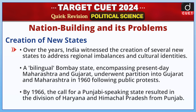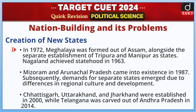Over the years, India witnessed the creation of several new states to address regional imbalances and cultural identities. A bilingual Bombay state comprising present-day Maharashtra and Gujarat underwent partition into Gujarat and Maharashtra in 1960 following public protest. By 1966, the call for a Punjabi-speaking state resulted in the division of Haryana and Himachal Pradesh from Punjab. In 1972, Meghalaya was formed out of Assam, alongside the separate establishment of Tripura and Manipur as states. Nagaland achieved statehood in 1963, and Mizoram and Arunachal Pradesh came into existence in 1987. Subsequently, demands for separate states emerged due to differences in regional culture and development. Chhattisgarh, Uttarakhand, and Jharkhand were established in 2000, while Telangana was carved out of Andhra Pradesh in 2014.